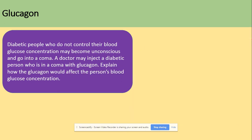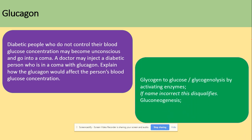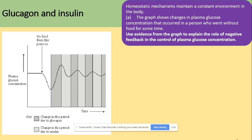For a diabetic person, glucagon would affect blood glucose concentration as follows: glycogen can be converted to glucose through glycogenolysis, activated by enzymes. Additionally, gluconeogenesis — the production of glucose from other sources such as glycerol or amino acids — can occur. Both of these processes increase the concentration of glucose in the blood.